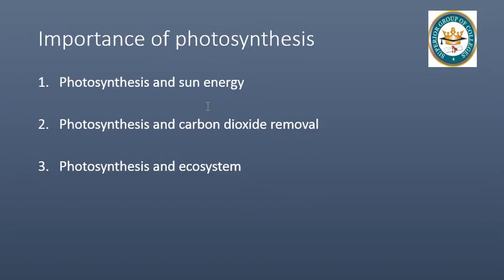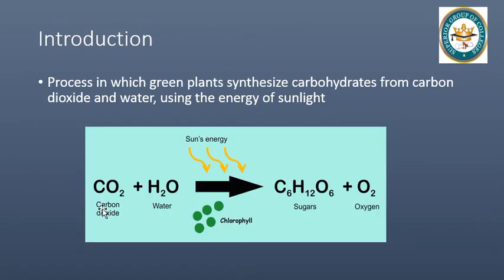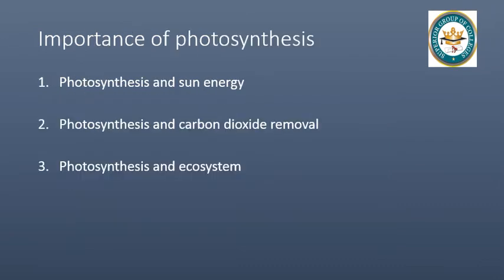The second importance is photosynthesis and carbon dioxide removal. In the photosynthesis equation, carbon dioxide is used as a reactant — it is used with water. Then, in the presence of sunlight and chlorophyll, it becomes carbohydrates and releases oxygen. Carbon dioxide is harmful; if it is present in large quantity in our environment, it will be very harmful. The photosynthesis process is important because it removes carbon dioxide from our environment and converts it, releasing oxygen. Photosynthesis is environmentally friendly.